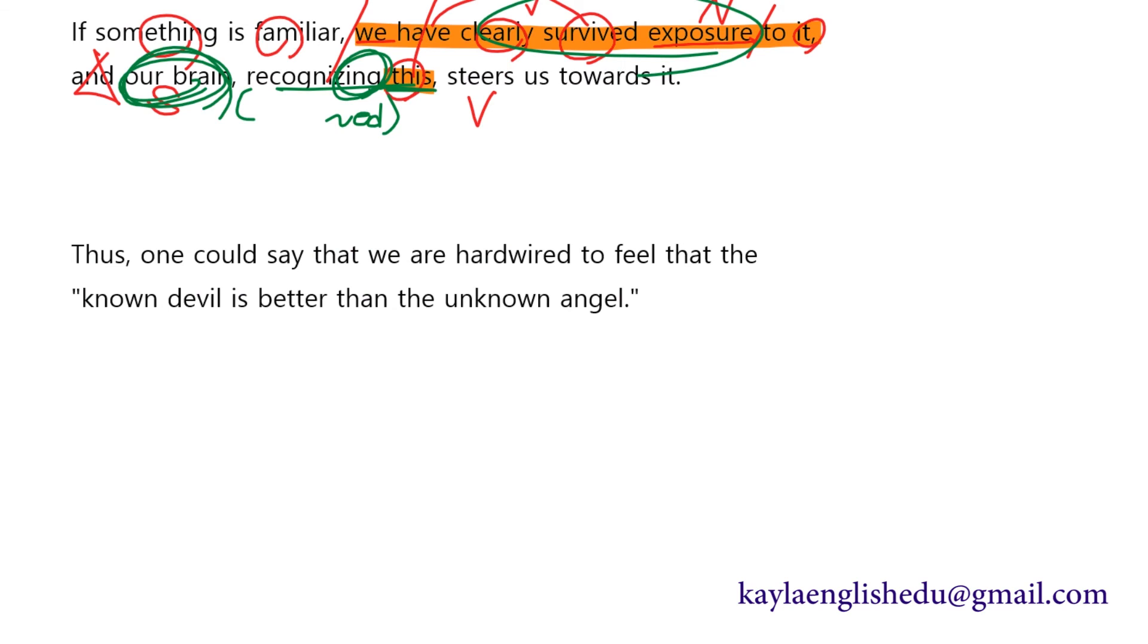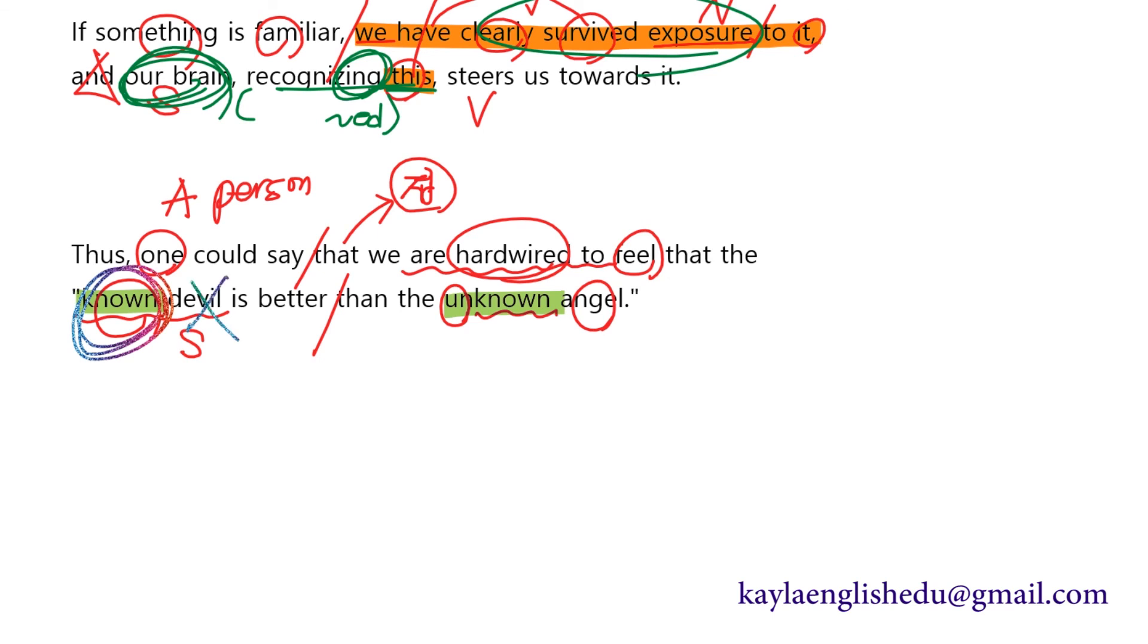thus one could say that we are hardwired to feel that the known devil is better than the unknown angel. 그러므로 여기에서 one은 어떤 사람은 이 정도. a person 이 정도 어떤 한 사람은 could say 말할 수 있어? 이 that은 접속사 that이고요. 무엇을? be hardwired to feel 느끼도록 hardwired 고착화 됐어? 고정되어 있어. 뭐라고 느껴요? known devil 알려진 악마가 better 더 낫다 뭐보다? 알려지지 않은 천사보다. 다시 말해서 여기서 악마와 천사에 대한 이야기를 하는 게 아니라요. known 알려진 거와 unknown 알려지지 않은 거 이 둘 중에서 뭐가 더 낫다? known 알려진 것이 더 낫다 라는 이야기에 초점이 있어요. 악마하고 angel이 초점이 아니에요.